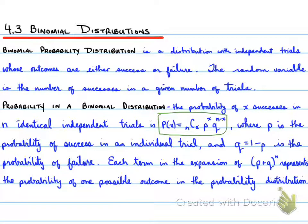Probability in a binomial distribution: the probability of x successes in n identical independent trials is P(x) = nCx times p to the power of x times q to the power of n minus x.